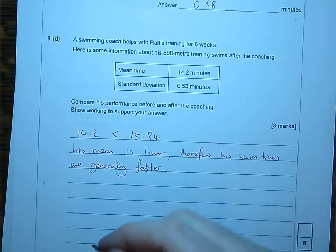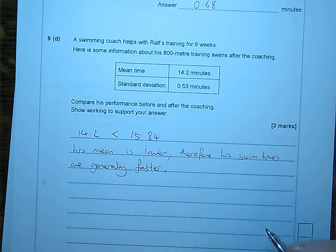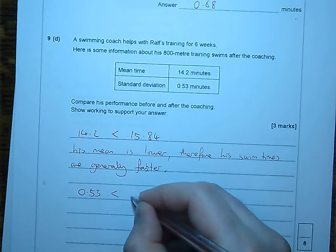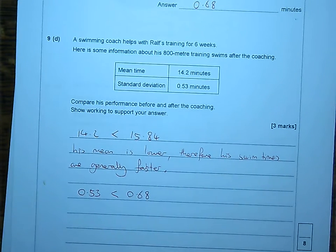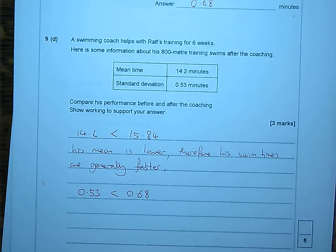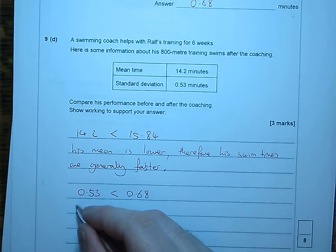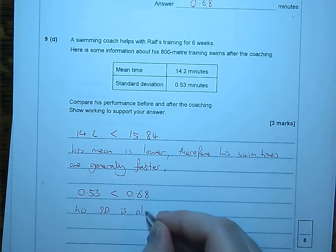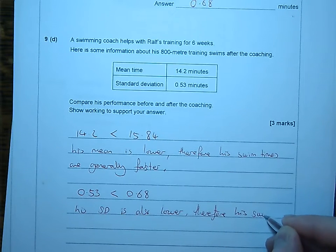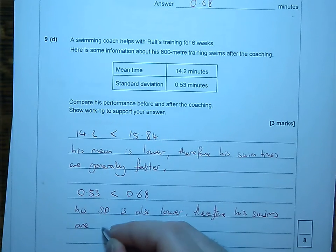Okay, and then we can also say of the standard deviation, 0.53 is also less than 0.68. I mean, do I need a calculation to show that? I mean, I guess I could subtract them and find the difference, but the key thing is that it's lower rather than what the difference is. I mean, it's significantly lower. Well, I mean, that's a whole different branch of maths, but it's lower nonetheless. So, his standard deviation is also lower. Therefore, his swims are more consistent.